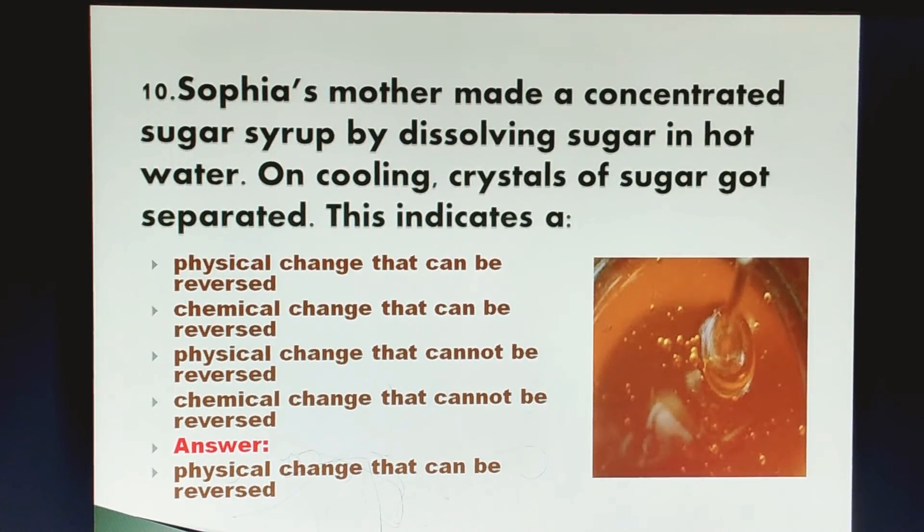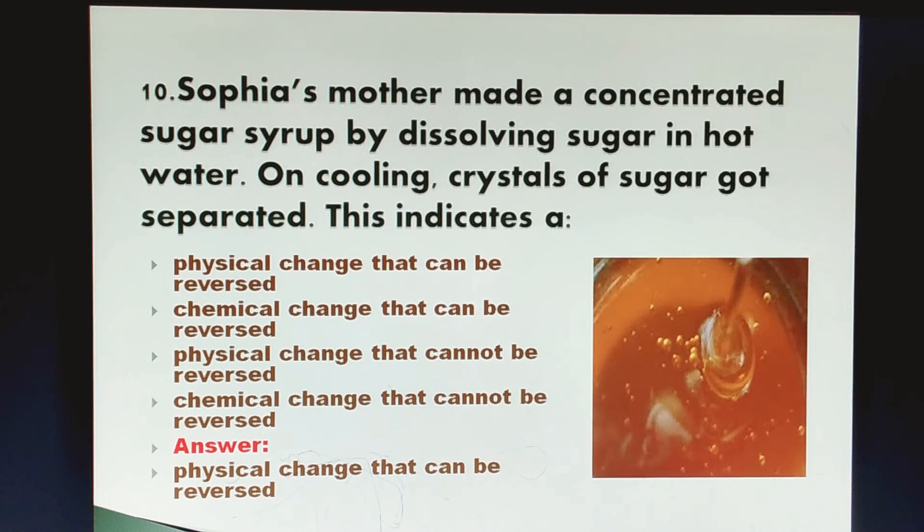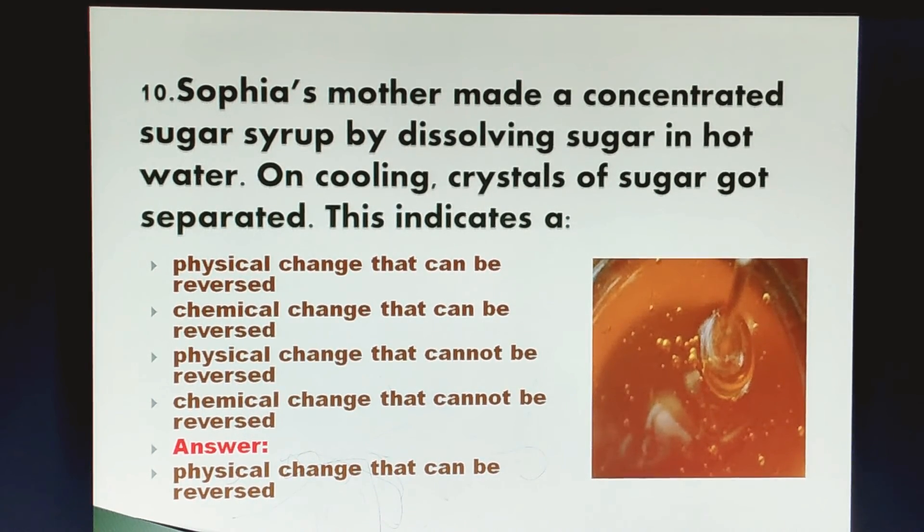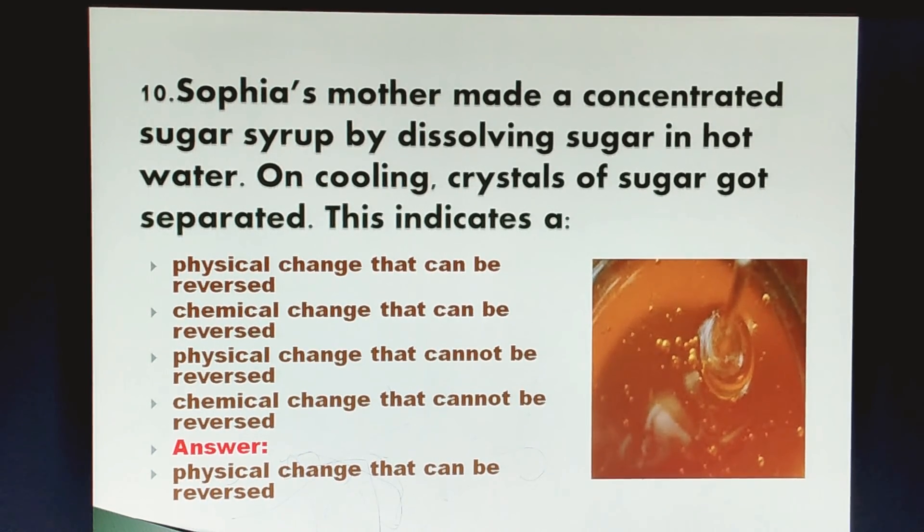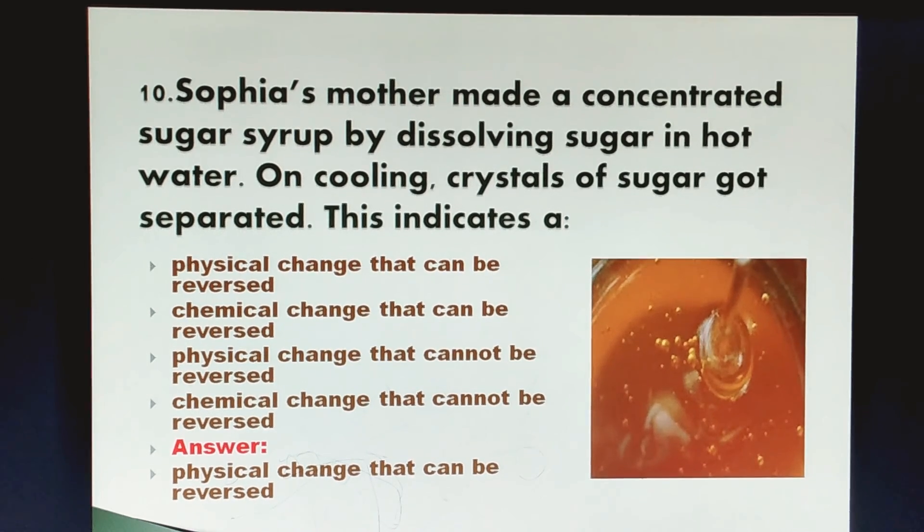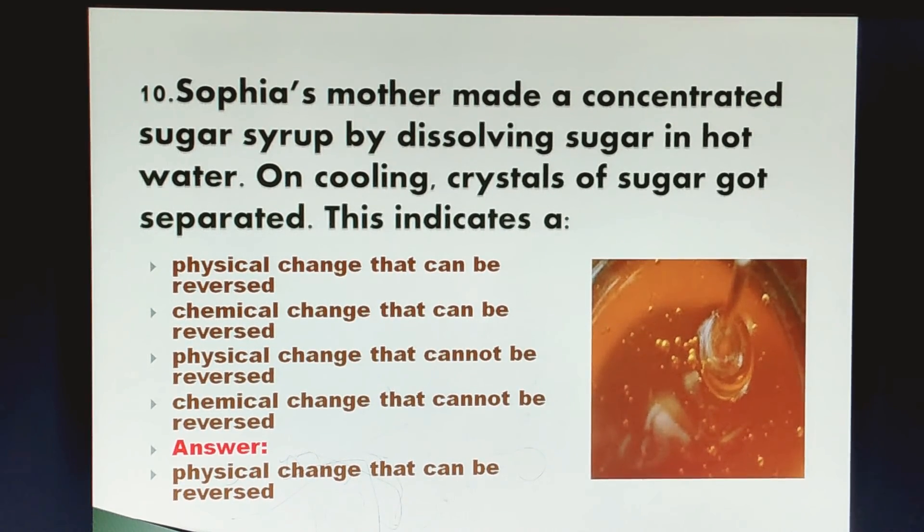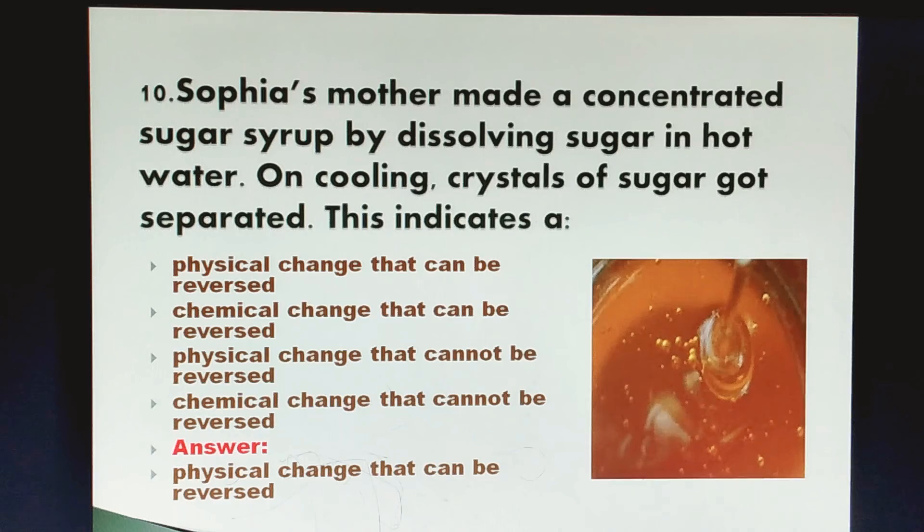Sophia's mother made a concentrated sugar syrup by dissolving sugar in hot water. On cooling, crystals of sugar got separated. This indicates: a physical change that can be reversed, chemical change that can be reversed, physical change that cannot be reversed, and chemical change that cannot be reversed. The correct answer is physical change that can be reversed.